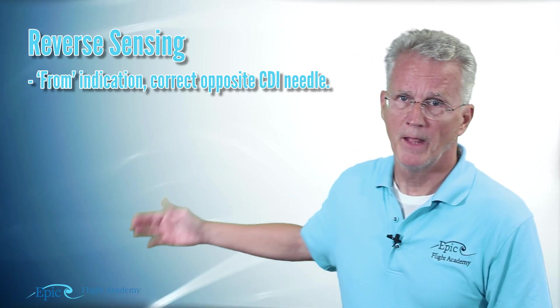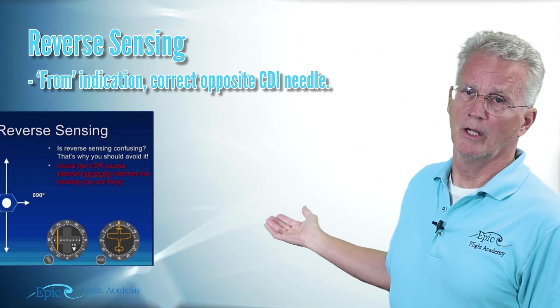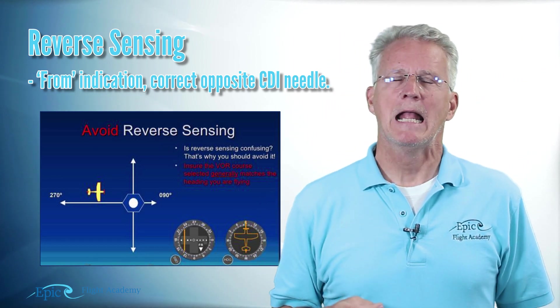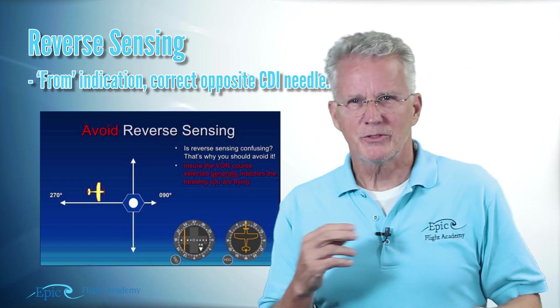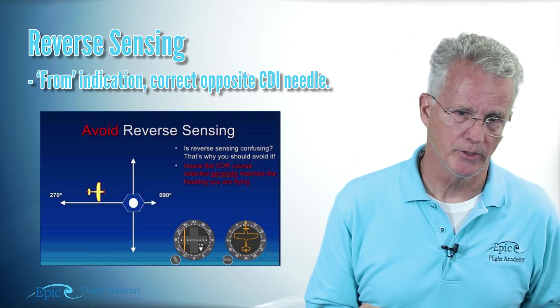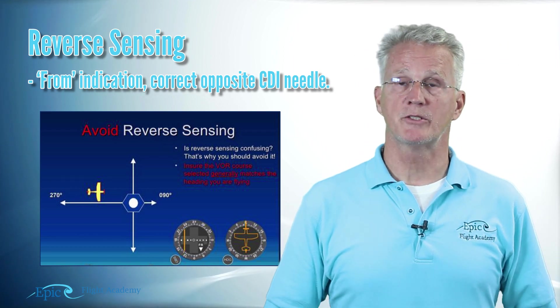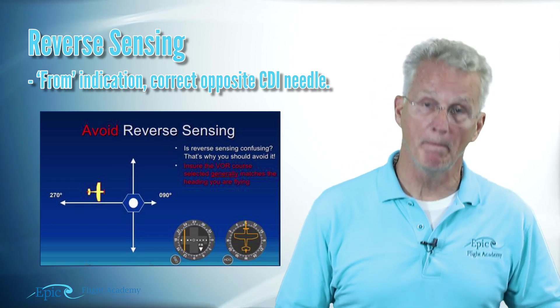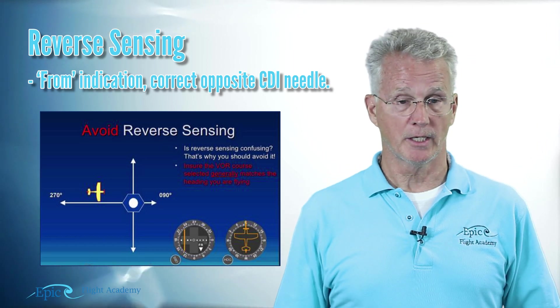Now let's get an idea of reverse sensing. If you've worked with VORs at all, you've probably heard this term. We show an example of it here on the screen from our online course. I want you to understand: the VOR is not really reverse sensing. What's happening is the pilot is flying to a station with a FROM indication, or from a station with a TO indication.